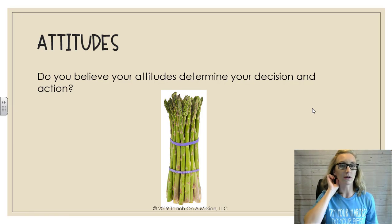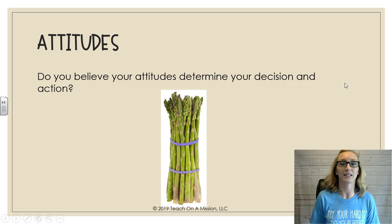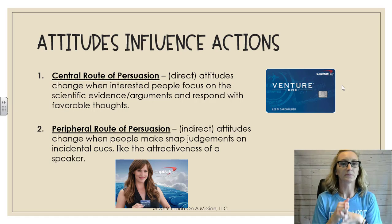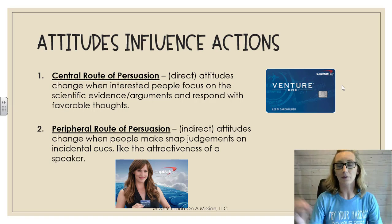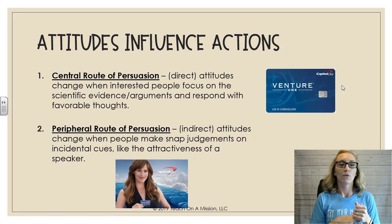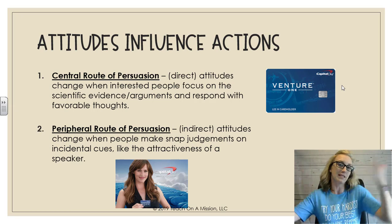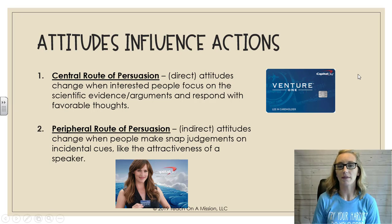Do your attitudes determine your decisions and actions? If you have the attitude that asparagus is disgusting, your behavior probably follows: you don't eat asparagus. There are two routes of persuasion. The central route is direct — attitudes change when interested people focus on facts, evidence, and arguments. The peripheral route is indirect — attitudes change when people make snap judgments on incidental cues like the attractiveness of a speaker, such as choosing a credit card because a celebrity endorses it.